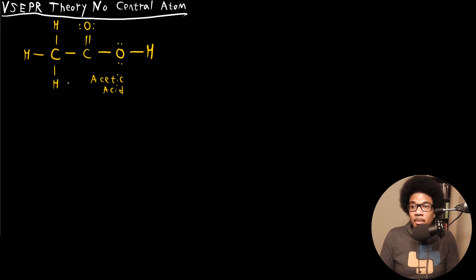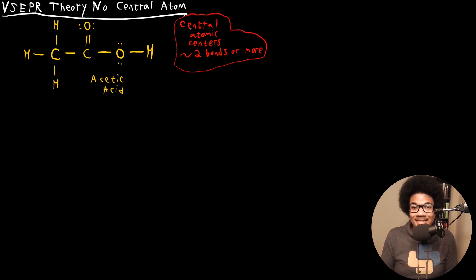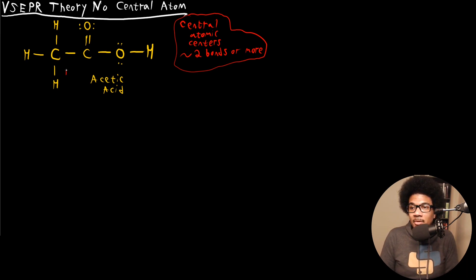The first thing you want to do is identify your central atomic centers. There is no single central atom, but we will have various central atomic centers — meaning anything that has at least two bonds or more, two real atom attachments or more. Anything with two bonds or more is identified as a central atomic center, and we look at the local geometry around each one. For acetic acid, I spot three central atomic centers: this carbon, this carbon, and this oxygen. Everything else is only involved in one real atom attachment.